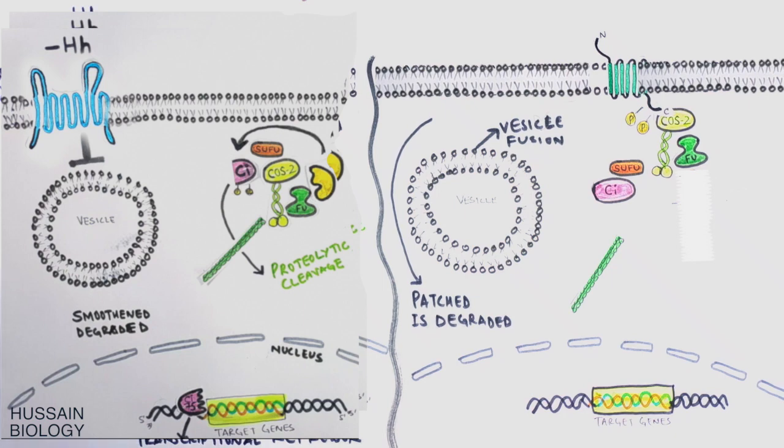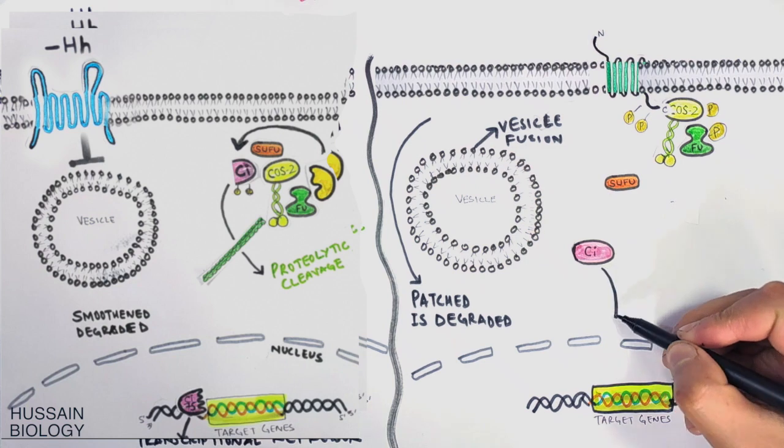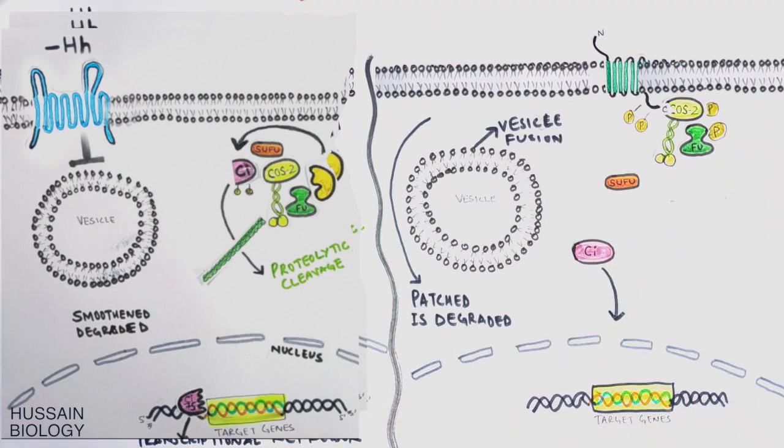These events lead to the dissociation of Cos2-Ci complex, so from here the Ci protein gets off from the Sufu inhibitory protein and moves towards the nucleus as shown in the diagram. This non-cleaved Ci protein, that is Ci 155 protein, gets to the nucleus.